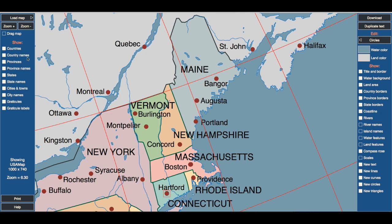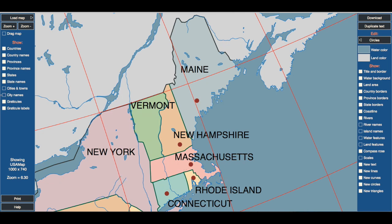Now after I've got that, I can turn off all the rest of the cities and towns. There — there they go. And I can also turn off the city names. I'm going to type in my own.